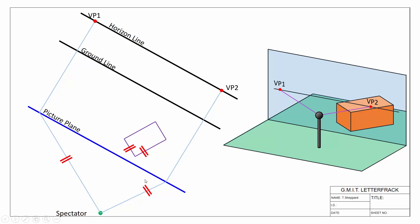The setup we have here shows our vanishing points found by going parallel to the various directions. Direction 1 gives us VP1, and direction 2 going parallel from our spectator onto the picture plane gives us VP2. In 3D, the spectator looking in the direction of direction 1 gives VP1, and looking in direction 2 gives VP2. That's the basic setup.